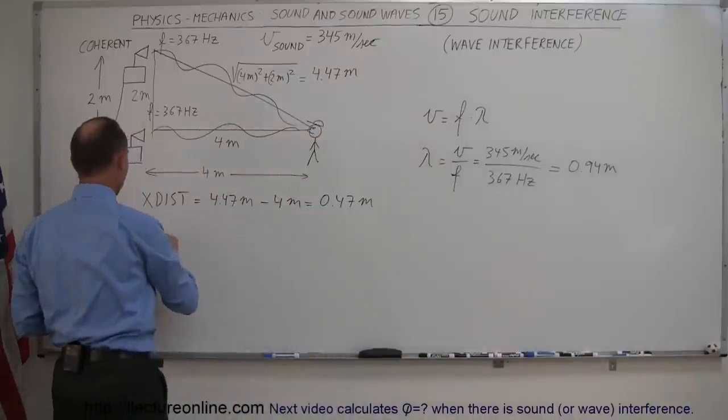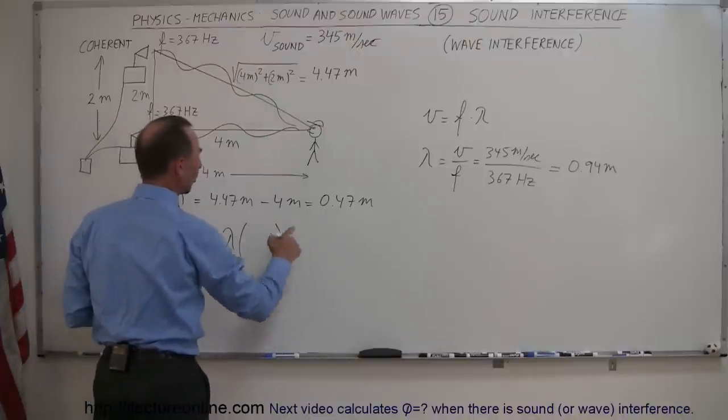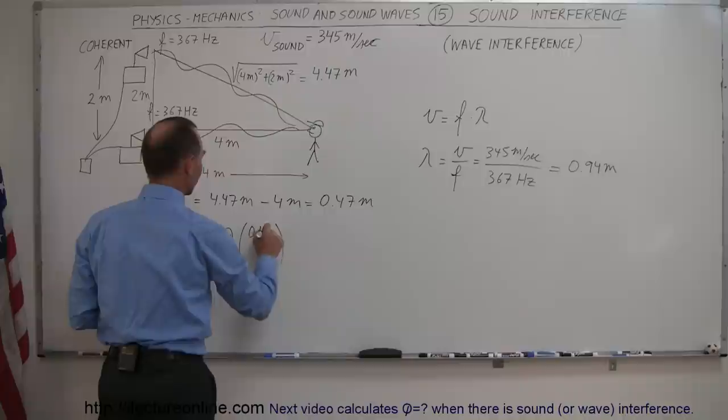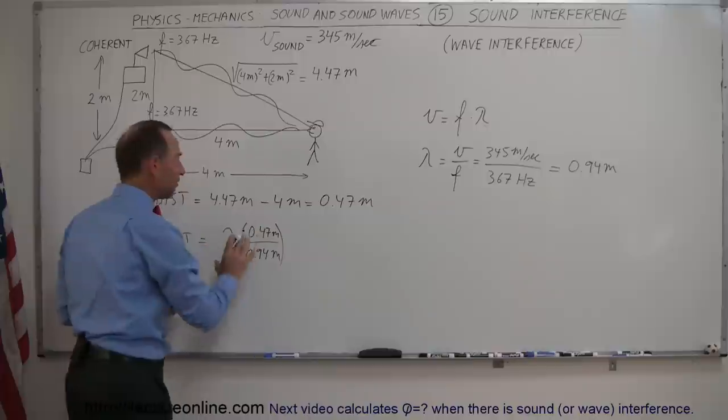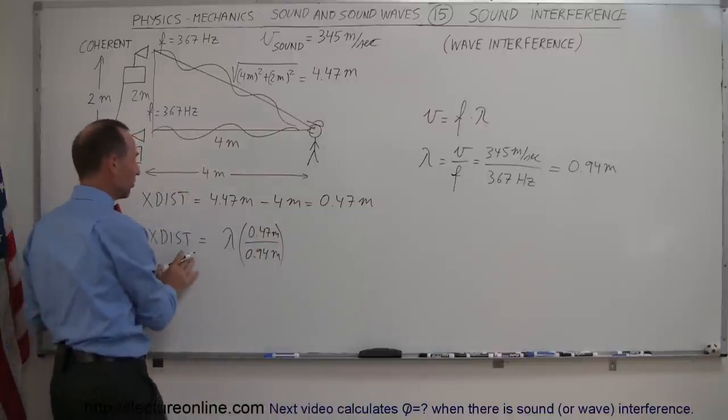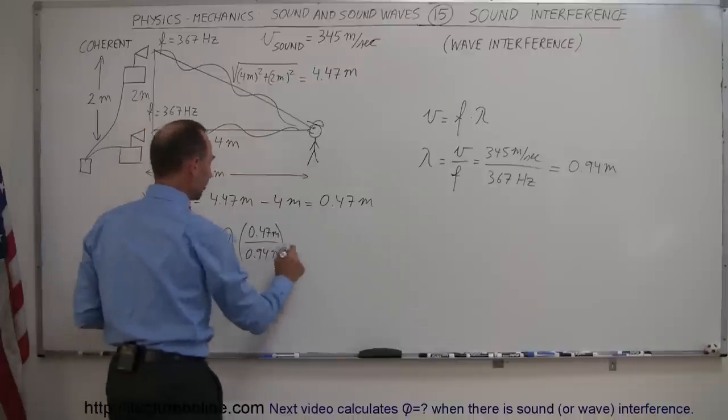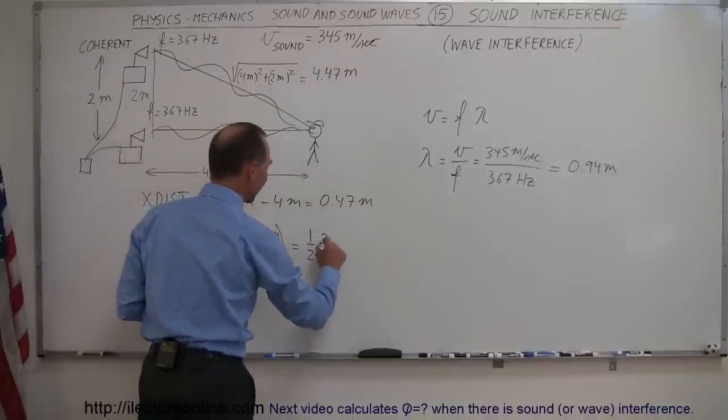So the extra distance here is equal to a wavelength times the ratio of this to a wavelength, so 0.47 meters divided by 0.94 meters. This is how I find what fraction of the wave this extra distance is. Since the extra distance is 0.47 meters and the wavelength is 0.94 meters, this is equal to exactly a half a wavelength.